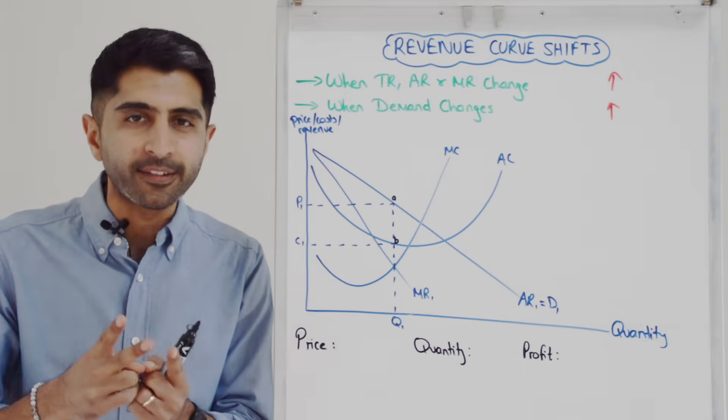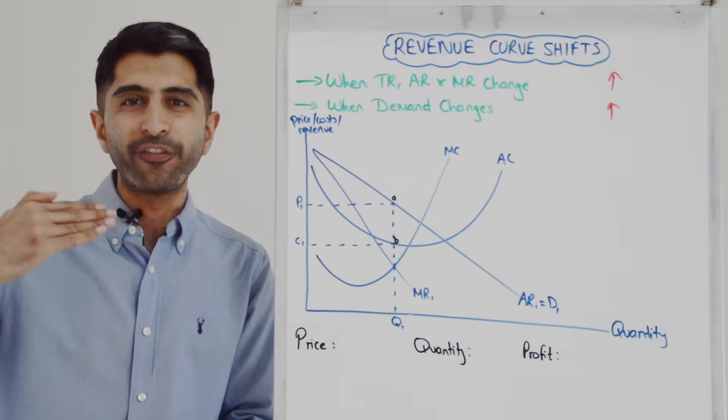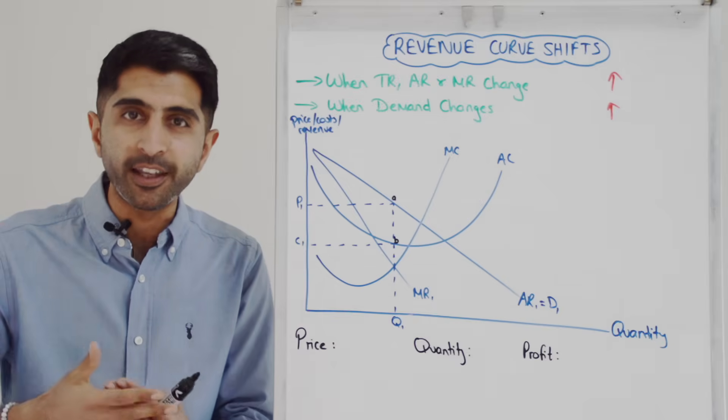Now there are two ways you can actually do this. One way is if you're given data that a firm's total revenue, AR, or MR has increased or decreased.